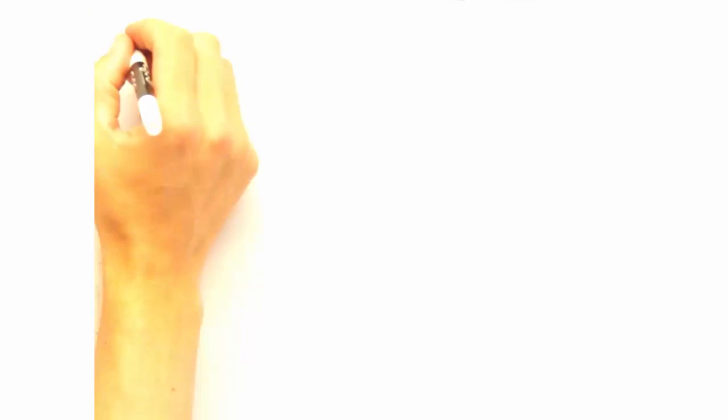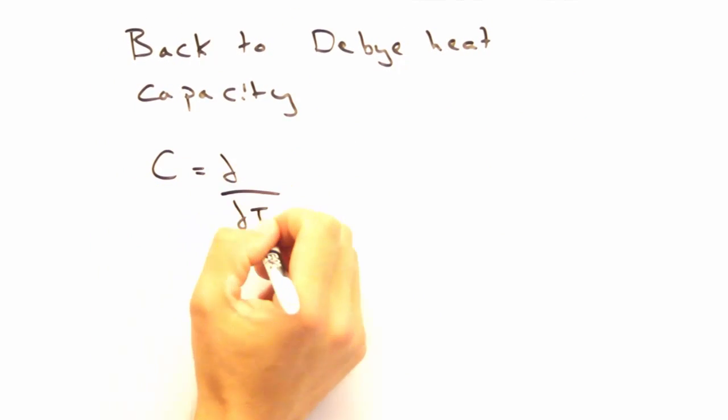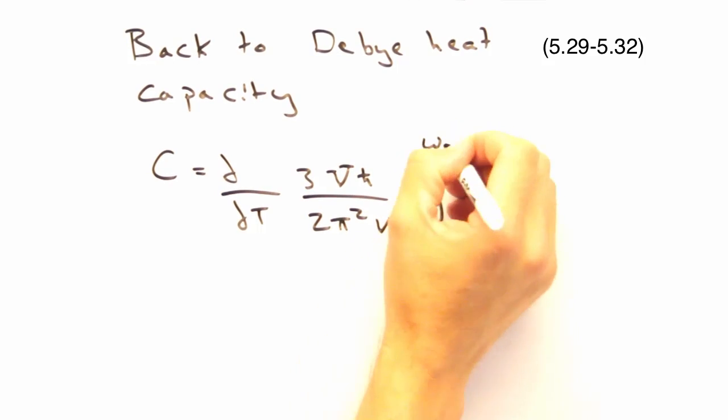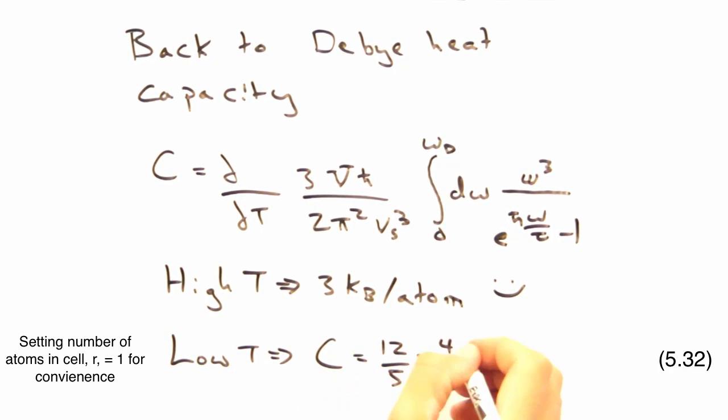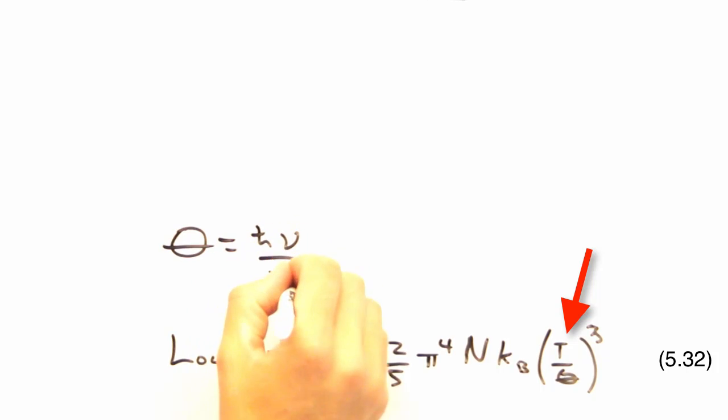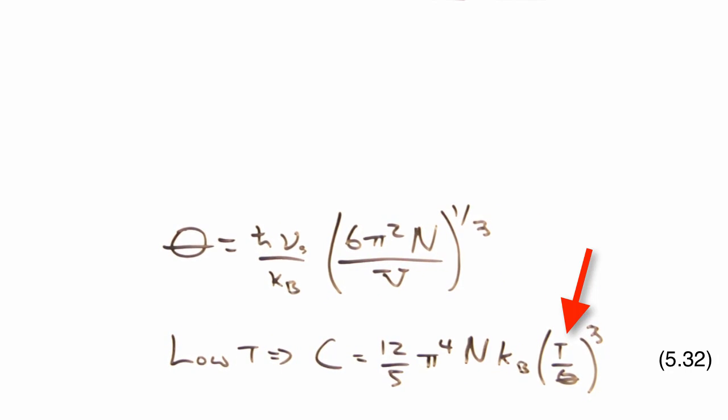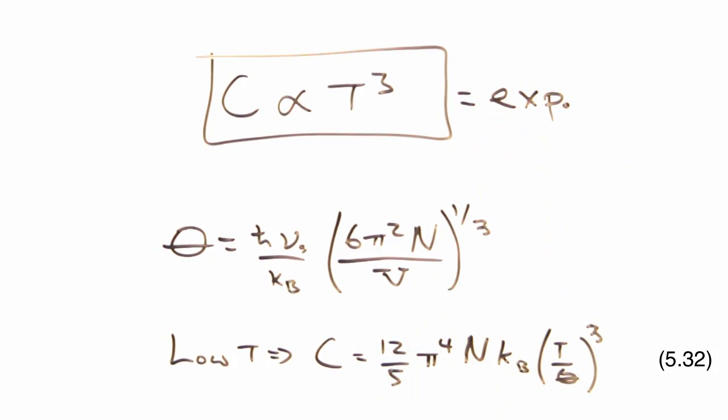Now we have all the components for our heat capacity integral. The exact math is laid out in the textbook, but the important parts are the high and low temperature limits. And at high temperature, we recover 3 kB per atom. That's pretty good stuff. The better news is the low temperature limit has a T cubed temperature dependence, which agrees very well with the experiment.